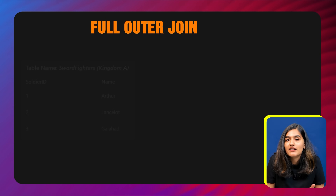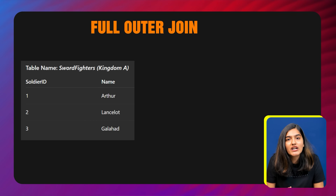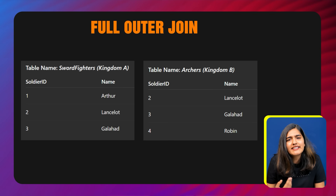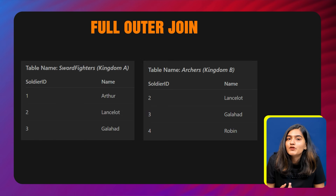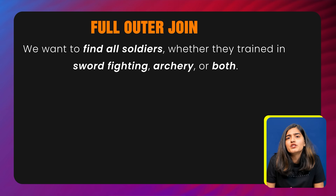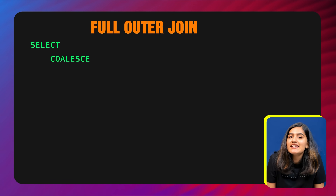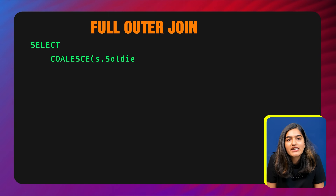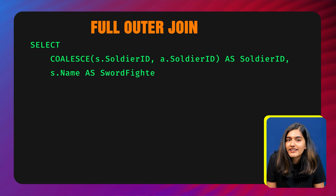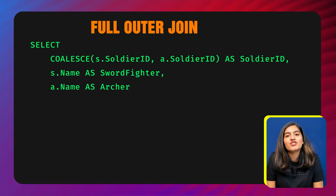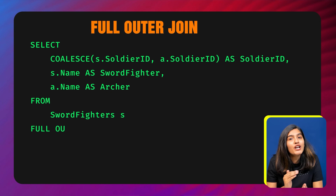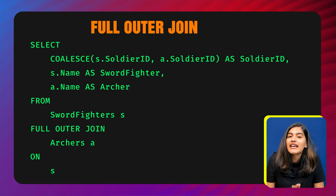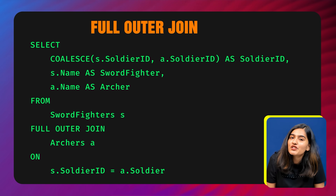We have two tables: sword_fighters (Kingdom A) with columns soldier_id and name, and archers (Kingdom B) with the same fields. We want to find all soldiers whether they are trained in sword fighting, archery, or both. The query is: SELECT COALESCE(s.soldier_id, a.soldier_id) AS soldier_id, s.name AS sword_fighter, a.name AS archer FROM sword_fighters s FULL OUTER JOIN archers a ON s.soldier_id = a.soldier_id.